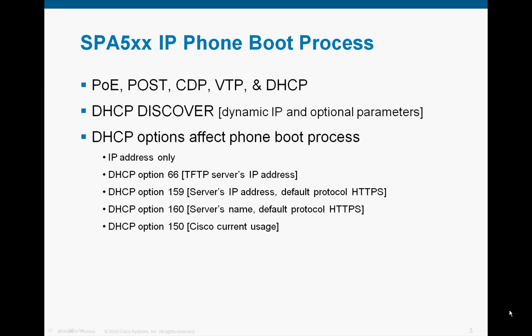The first part of a phone's boot process is to detect its power source. In the event of receiving power over Ethernet, the phone takes power from the CAT5 cable connected. The phone then performs a power-on self-test, then the Cisco Discovery Protocol takes place, then the VLAN trunking protocol runs, and then finally the Dynamic Host Configuration Protocol starts up. Because of the Cisco Discovery Protocol, the phone will automatically insert itself onto the correct VLAN for voice and perform DHCP Discover on the appropriate VLAN.